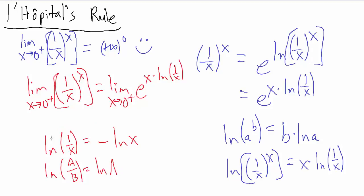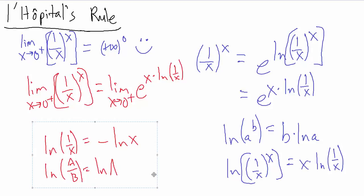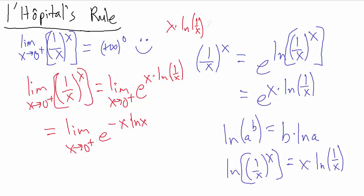Using that fact, the limit of 1 over x to the x equals the limit as x goes to 0 from the positive side of e to the negative x times natural log of x. That's because x times ln(1/x) simplifies to x times (−ln x) = −x times ln x.